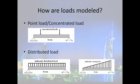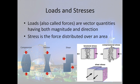Once we know what loads we're dealing with, we have to model them so we can apply our physics formulas and design the structure. Loads might be a point load or concentrated load, which means all the load acts at one point — you sitting at your desk would be modeled as a point load. Loads can also be distributed, either uniformly or varying. Wind blowing against a wall would be a distributed load, because it's acting all over the wall, not just at a single point. These loads are all forces — they are a vector quantity, meaning they have both magnitude and direction. The forces can either cause compression, tension, or shear in the members. Compression squeezes the member, tension pulls the member apart, and shear forces push parts of the member in opposite directions, kind of like what happens when you tear a piece of paper. When these forces are distributed over an area, it's called stress.